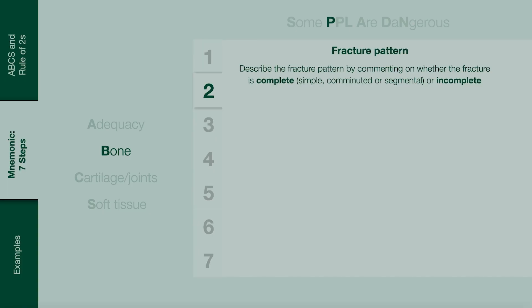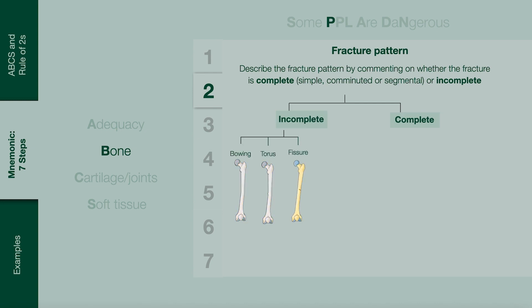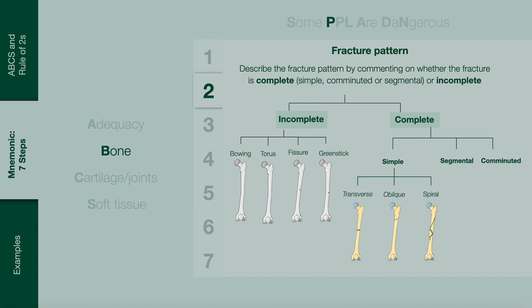Next, describe the fracture pattern. Initially determine if the fracture is complete or incomplete. Incomplete fractures include bowing, torus, fissure and greenstick fractures. Complete fractures are further classified as simple, segmental and comminuted. Simple fractures are transverse, oblique and spiral. Segmental fractures have two fracture lines segmenting the bone into three, and comminuted fractures have multiple fracture lines forming multiple fragments.